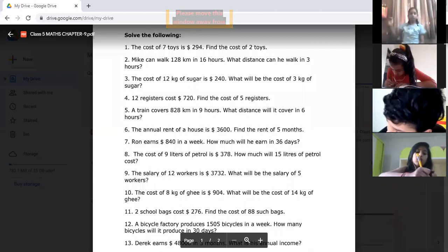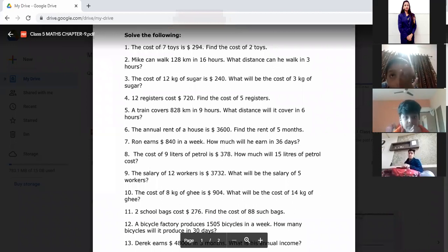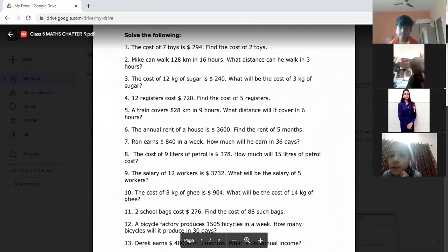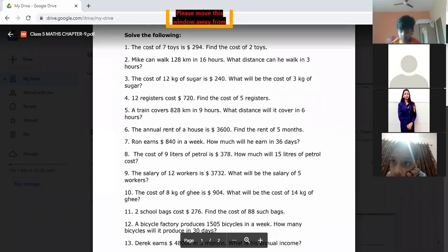If you don't understand any questions, you can raise your hand. Question number 6: The annual rent of a house is 3,600. Annual rent means 12 months is 3,600. You have to find the rent of 5 months. So 3,600 divided by 12, you will get the answer of 1 month. Now multiply that answer with 5 months.